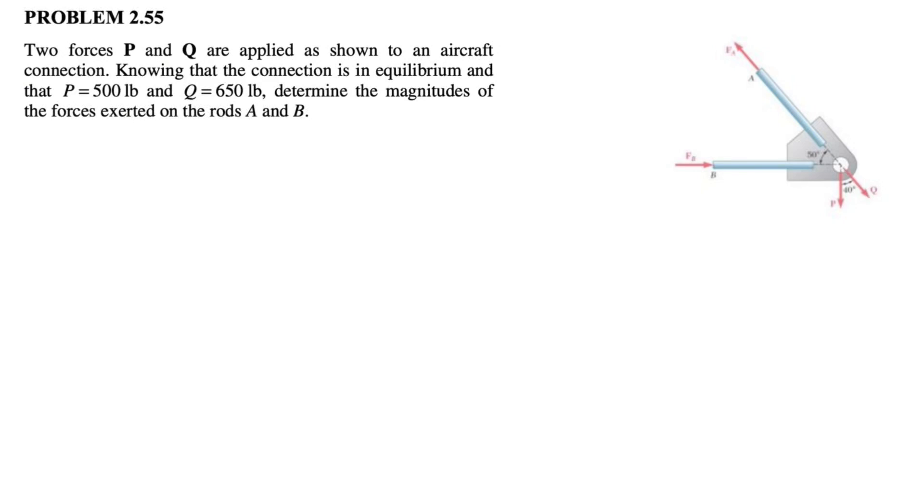All right guys, let's see how we can solve question 55 from the second chapter of the Beard and Johnson textbook, Engineering Mechanics. We have these two forces P and Q that are applied as we can see, and we know the whole connection is in equilibrium. By equilibrium, we mean that sum of all forces has to be zero. We know force P is 500 pounds, force Q is 650.